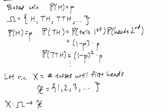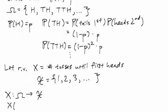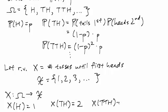So what does that mean? Well, X takes as input an element in the sample space. For example, heads - what is this? This is going to be 1 because this is heads in one toss. And similarly, X of tails and then heads, well this is going to be equal to 2 because we have 2 tosses until the first heads, and so forth.